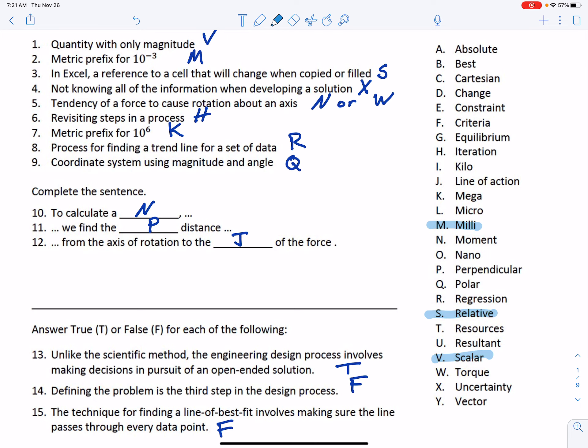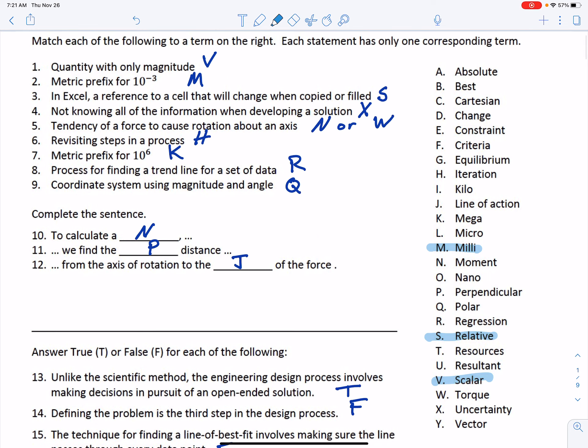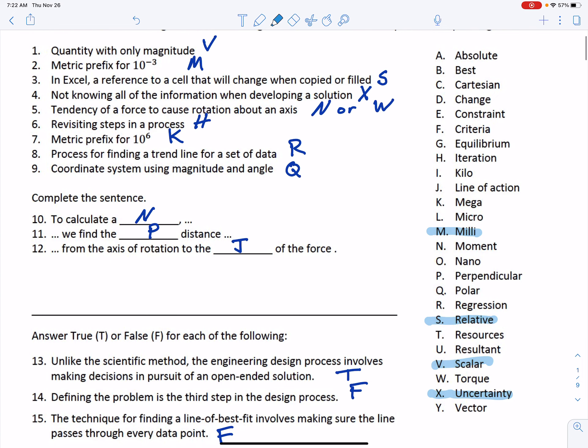Next, in Excel, a reference to a cell that will change when copied or filled, that's relative addressing in Excel, so hopefully you'll remember that one. This comes from some of the Oakes and Leone reading: not knowing all the information when developing a solution, that's item X. And yes, you can still use your reading assignments from that textbook to answer questions on the final or on subsequent exams.